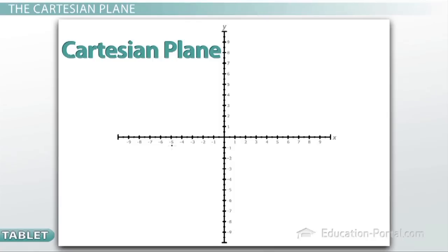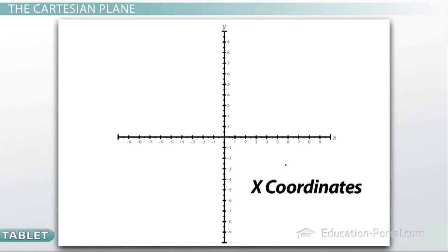The coordinates that go from left to right are the x coordinates, which means that the line going left and right through the middle of the graph is what is called the x-axis.